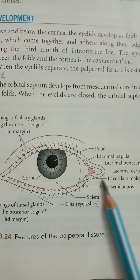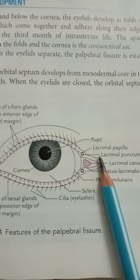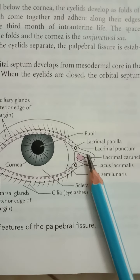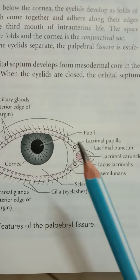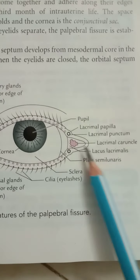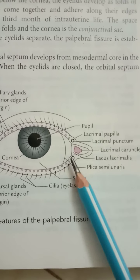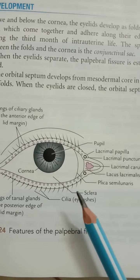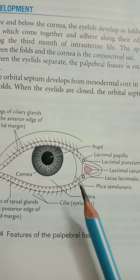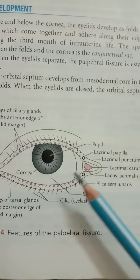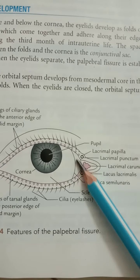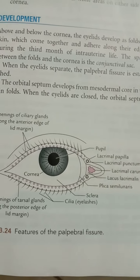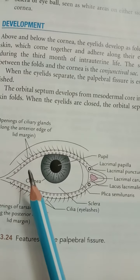At the medial canthus there is a small triangular space called the lacus lacrimalis. Within it there is an elevation called the lacrimal caruncle, which is made from modified skin and modified glands. Lateral to the caruncle, the bulbar conjunctiva forms a fold called the plica semilunaris.